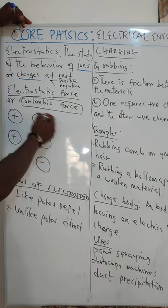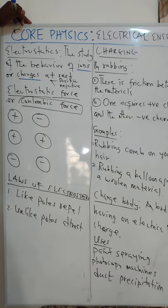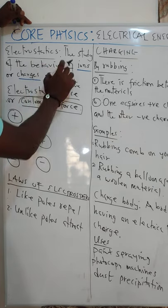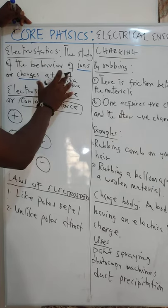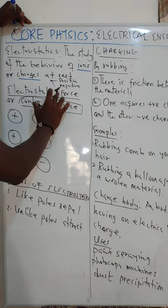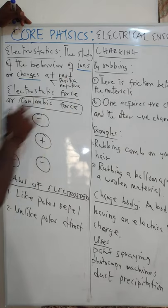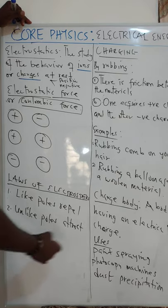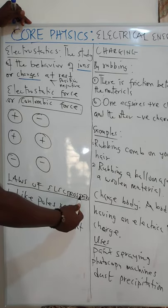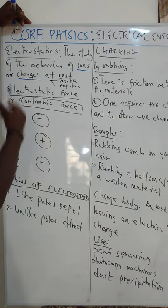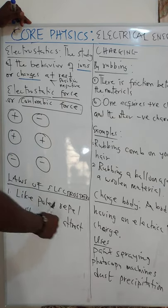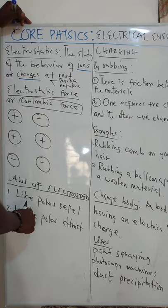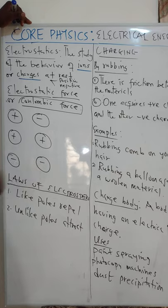We are not going to go deeply into this because that aspect is our elective aspect. So we know that electrostatics is talking about the behavior of charges at rest, and there are two types of charges: the positive charge and the negative charge. Now, the next thing is the laws of electrostatics. Based on our stationary charges, we have two laws. The first law states that like charges repel and unlike charges attract.